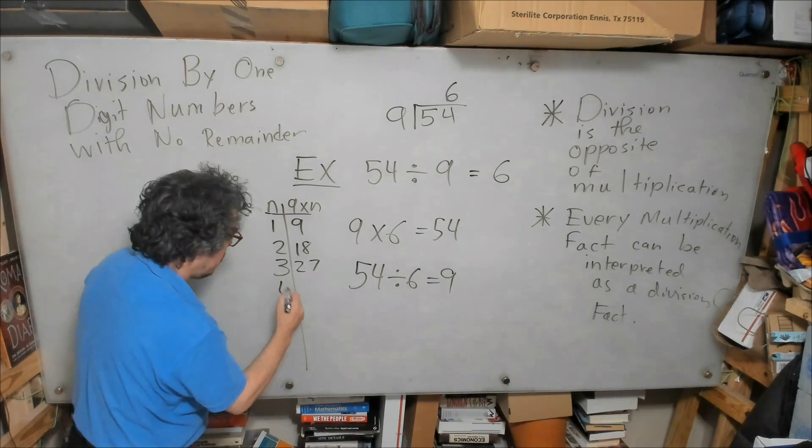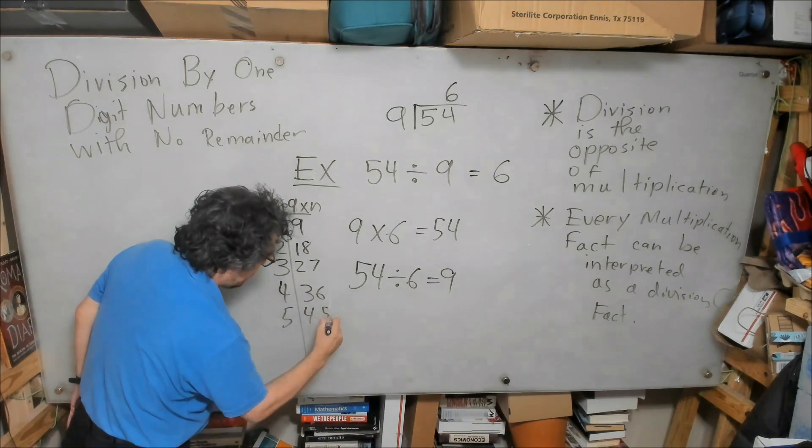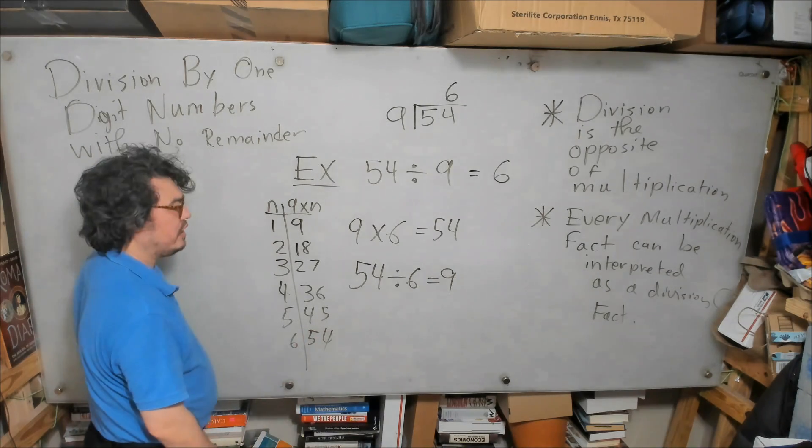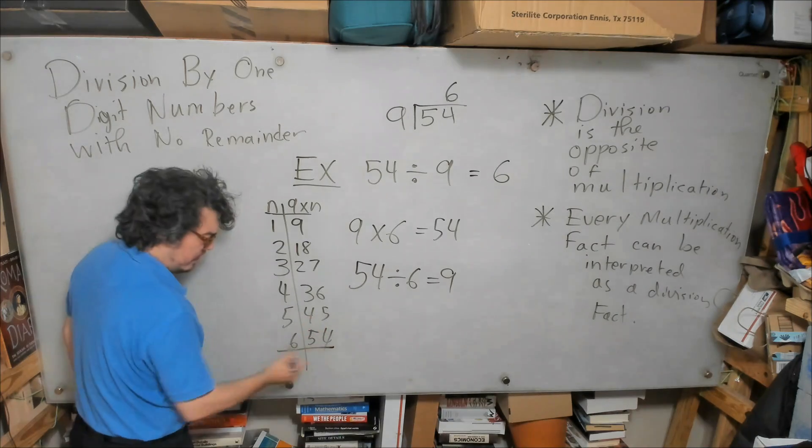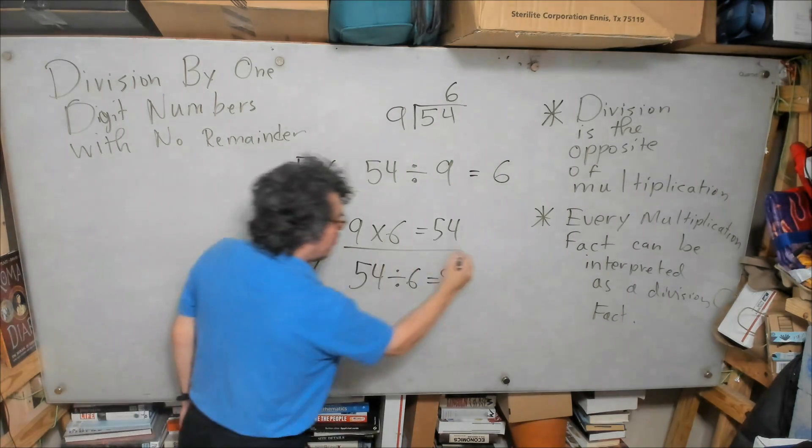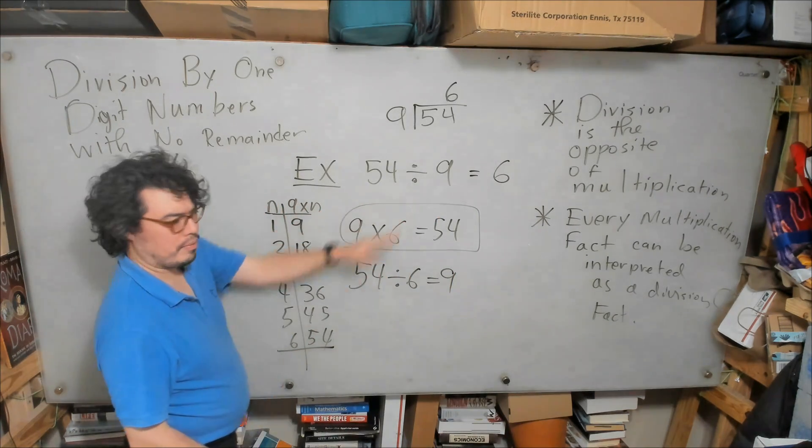We would have continued here. 4 would have given us 36, 5 would have given us 45, 6 would have given us 54. And once we got there, we would have seen the relationship we needed, which is this rule. This rule tells us that 9 times 6 is 54, which was this multiplication fact, which was able to allow us to solve this original problem.